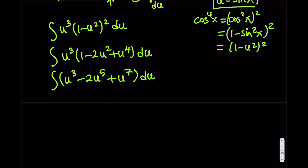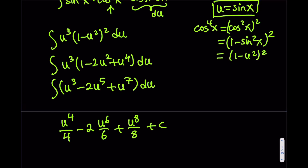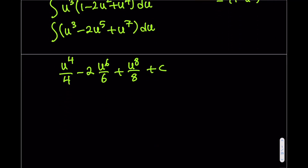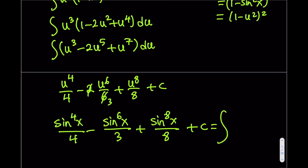Integrating term by term using the power rule: u⁴/4 minus 2·u⁶/6 plus u⁸/8 plus C. Back-substituting with u = sin x gives sin⁴x/4 minus sin⁶x/3 plus sin⁸x/8 plus C. That is the integral of our original expression, sine cubed times cosine to the 5th.